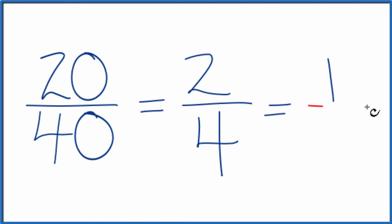2 divided by 2 is 1. 4 divided by 2, that's 2. We end up with 1/2, and we can't reduce this any further.